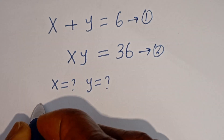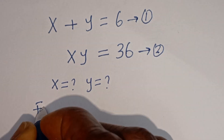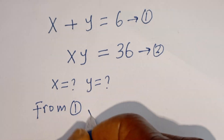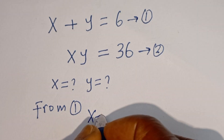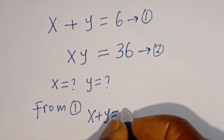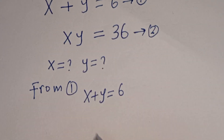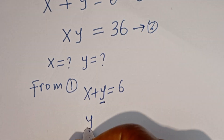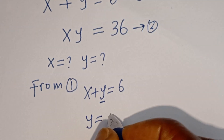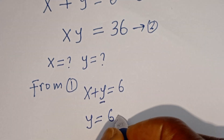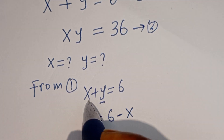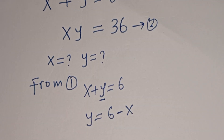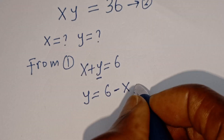From equation 1, s plus y equals 6, we can make y the subject of the formula: y is equal to 6 minus s. You may also make s the subject of the formula if you want. Let's call this equation 3.